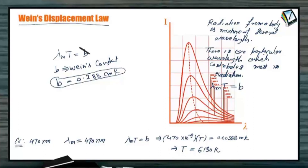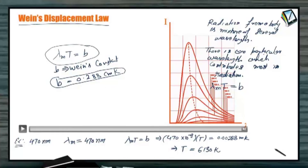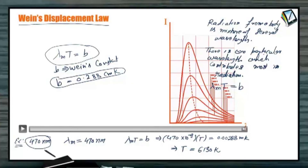Such questions may be asked on Wien's displacement law. This is a simple relation that you have to use, and normally these questions will be very simple. For light coming from the sun, this particular wavelength contributes the most to the total radiation, and according to this wavelength we can assess the temperature of the sun using Wien's displacement law.